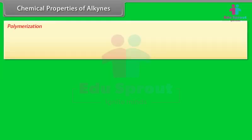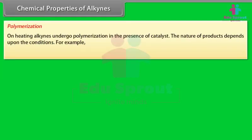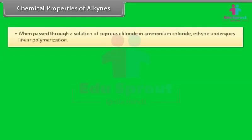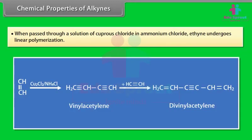Polymerization: on heating, alkynes undergo polymerization in the presence of a catalyst. The nature of products depends upon the conditions. For example, when acetylene is passed through a hot copper tube, it polymerizes to benzene. When passed through a solution of cuprous chloride in ammonium chloride, ethyne undergoes linear polymerization.